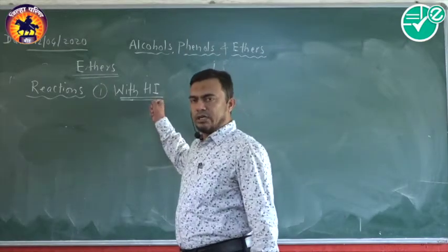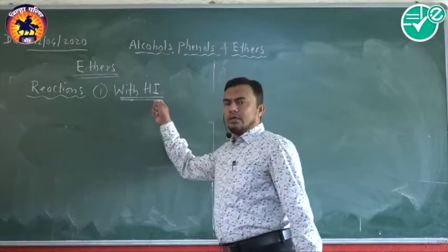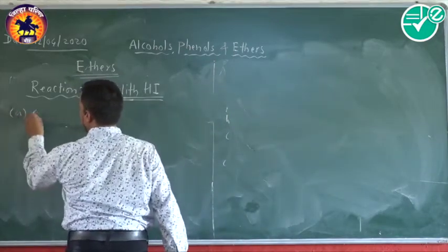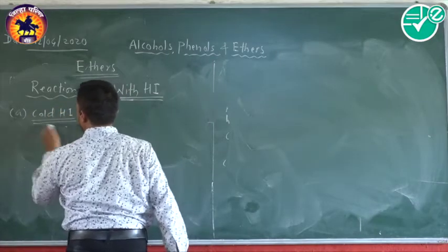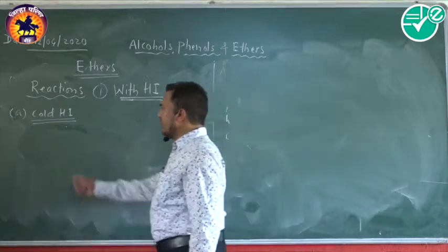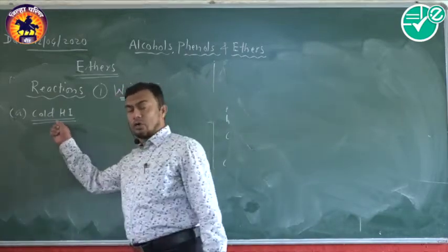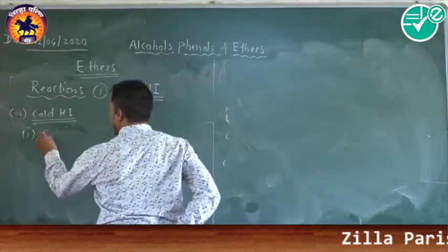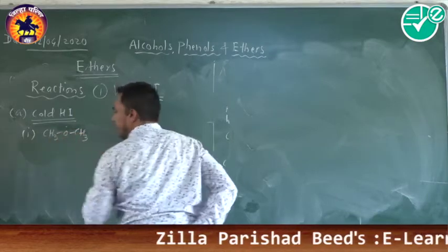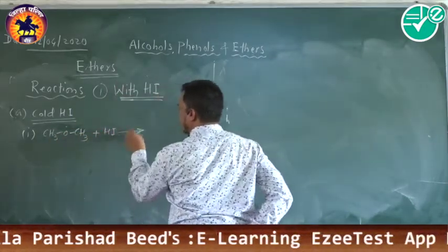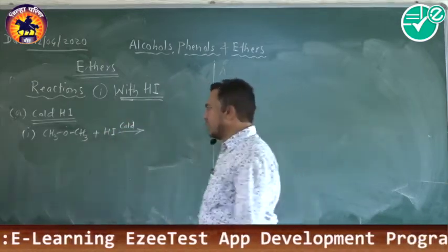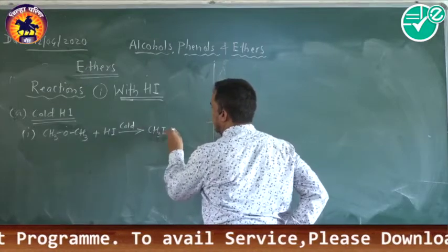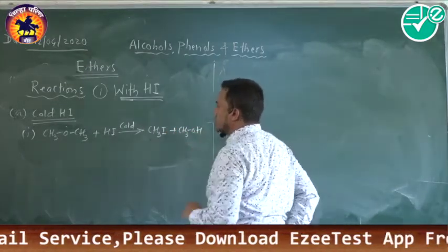Hydrogen halides react with ethers, and hydrogen iodide is the most reactive. Different conditions affect how ethers react. The first condition is cold hydrogen iodide — at room temperature, ethers react with cold hydriodic acid. For a simple ether like dimethyl ether treated with hydriodic acid in cold conditions, only one cleavage takes place.